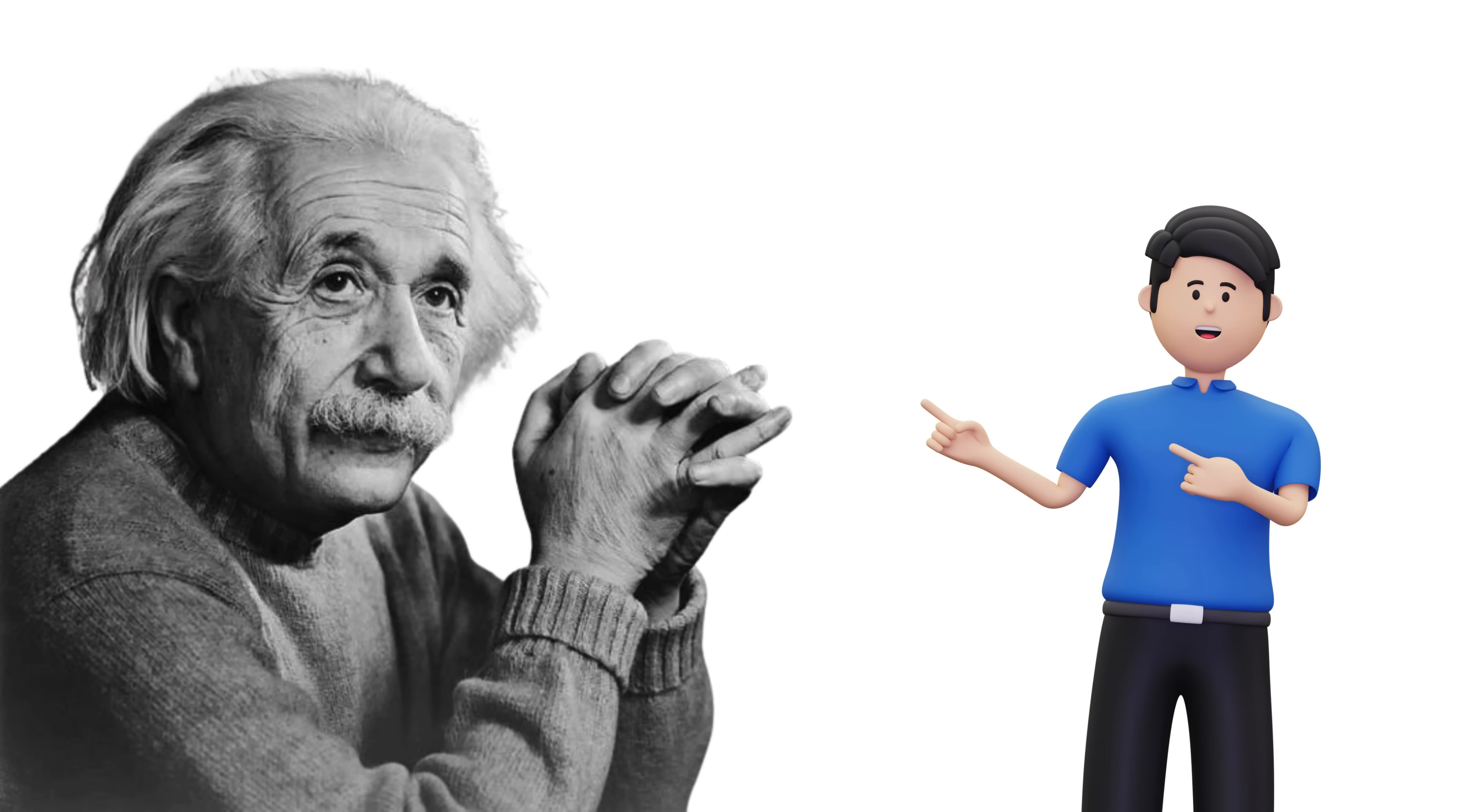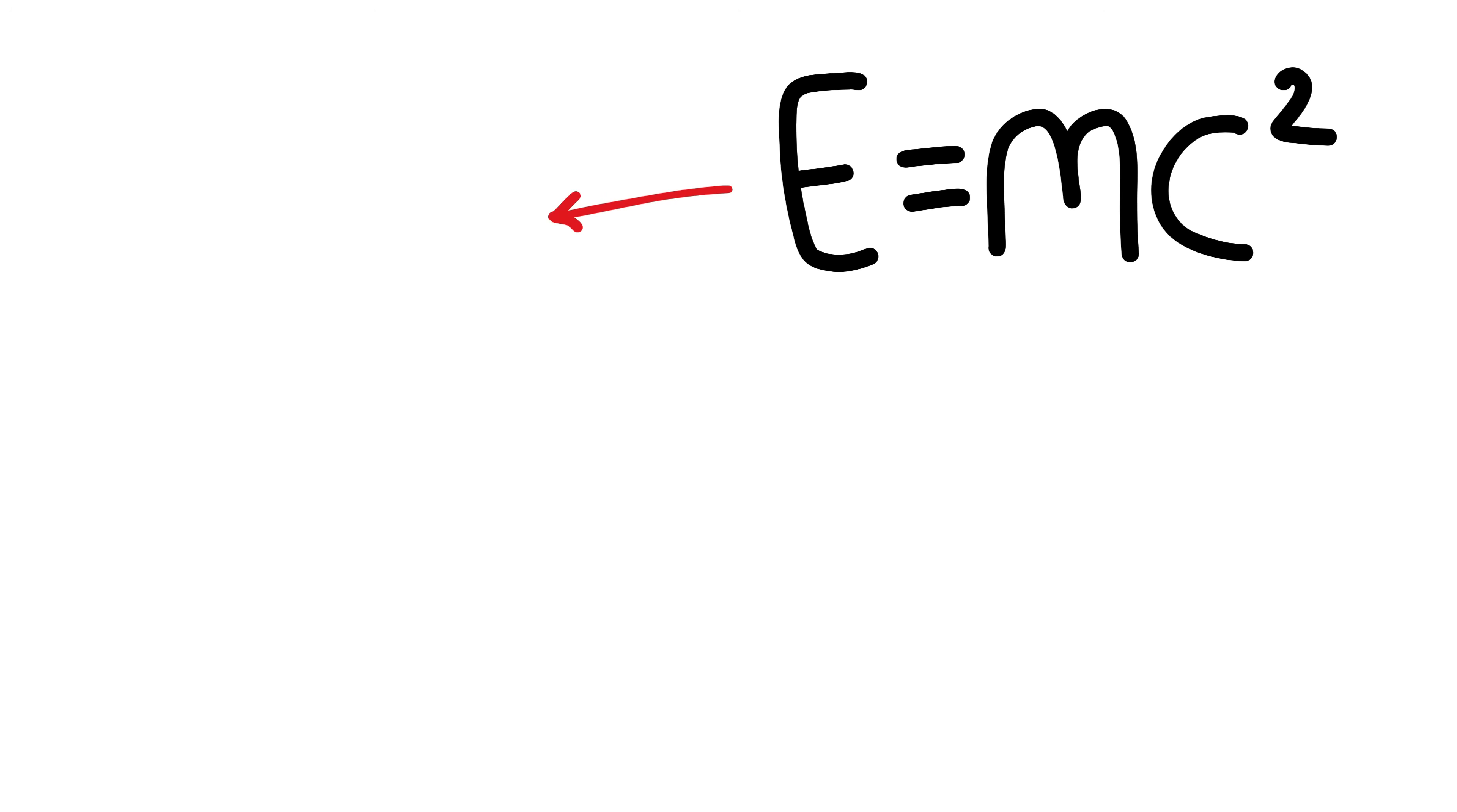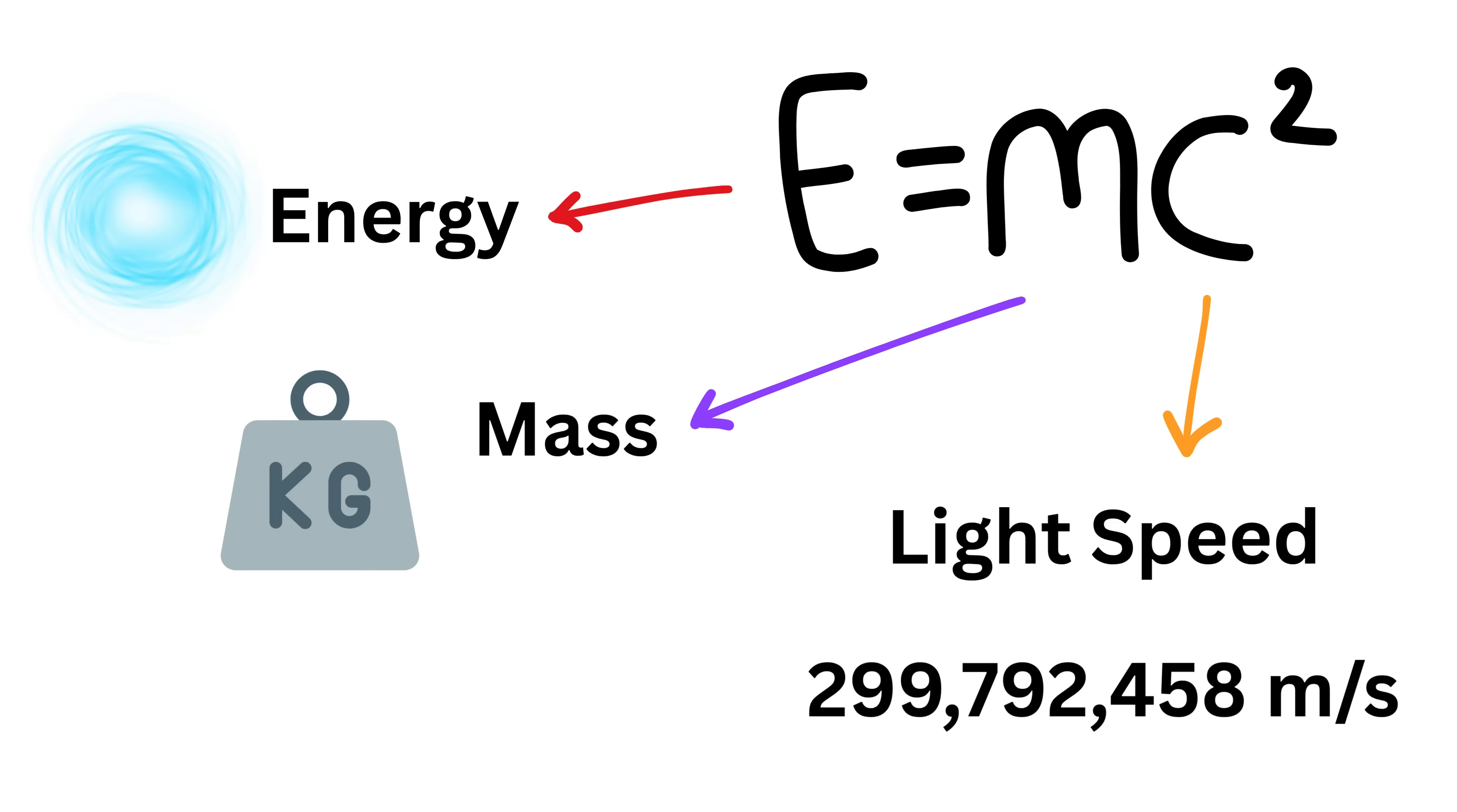Let's begin with the most famous equation in the world given by Einstein, which is E equals m times c squared. Here E stands for energy, M stands for mass, and C is the speed of light, which is about 299,792,458 m/s. Now what does this equation actually tell us? It tells us that mass and energy are two sides of the same coin.